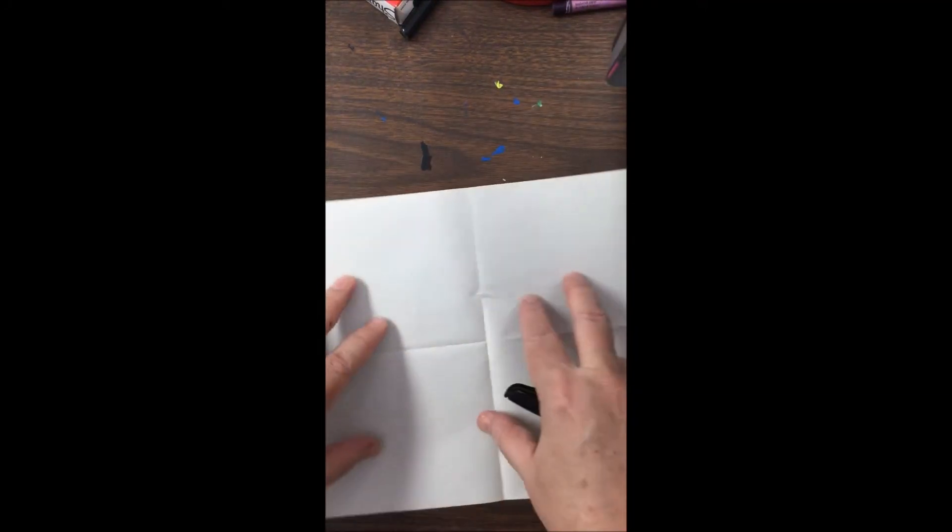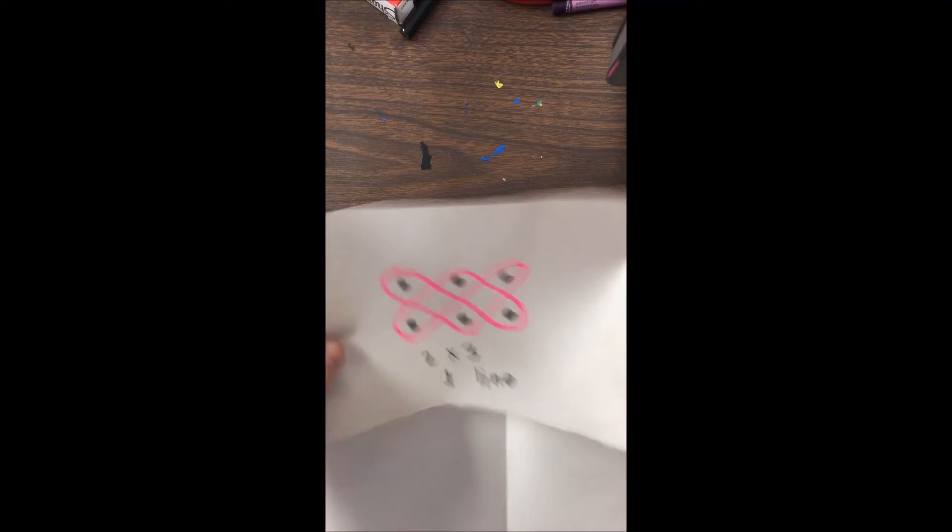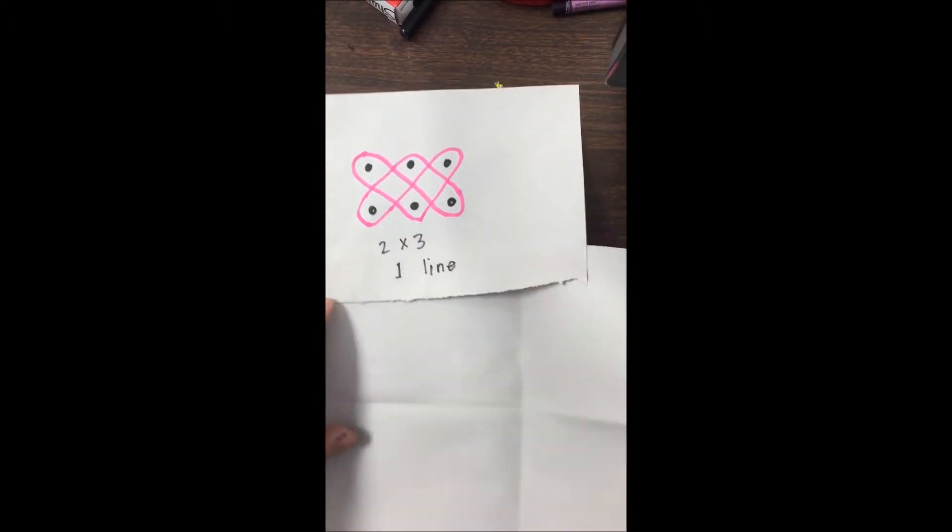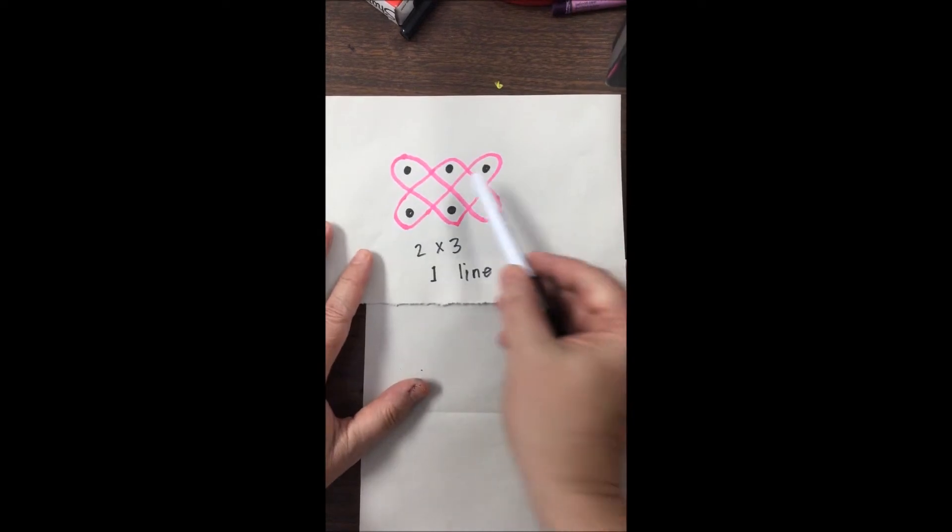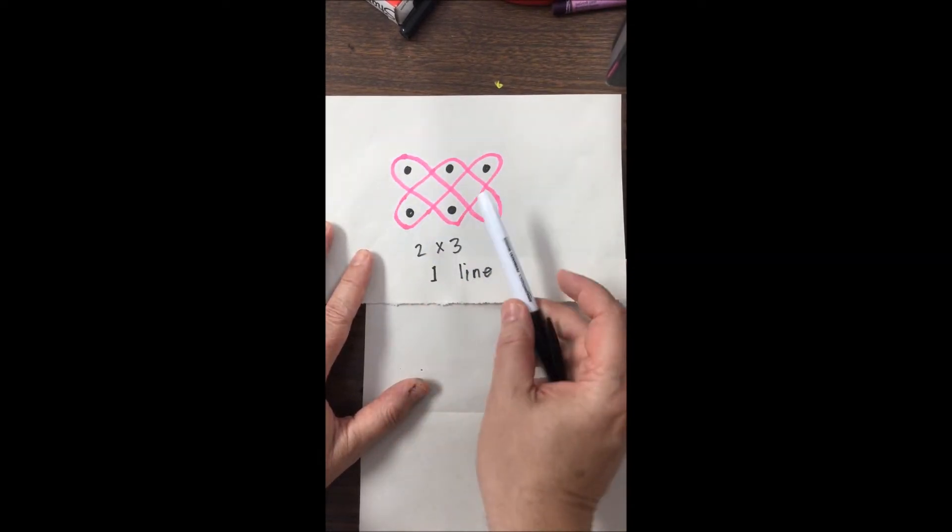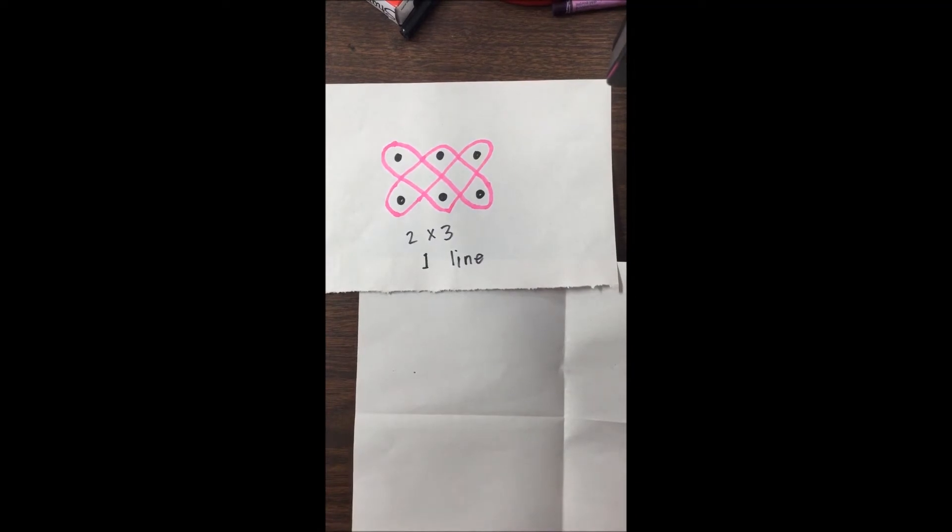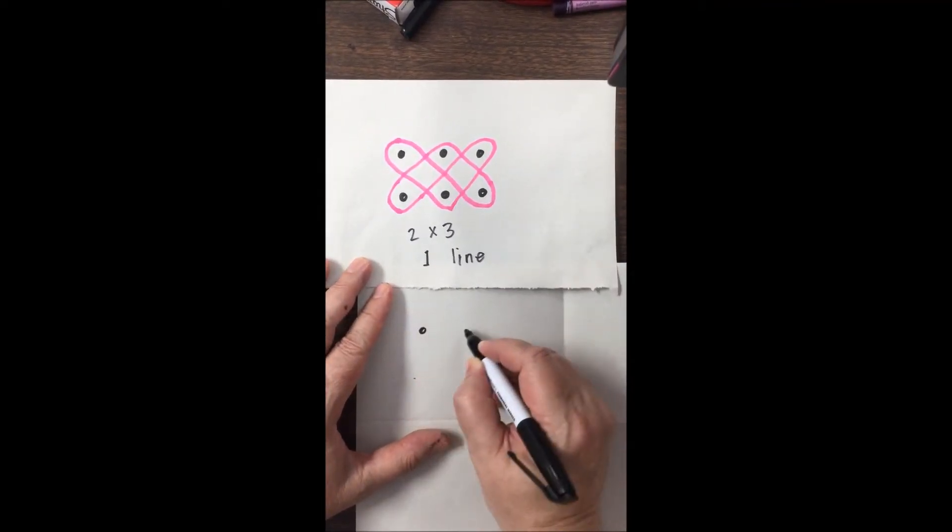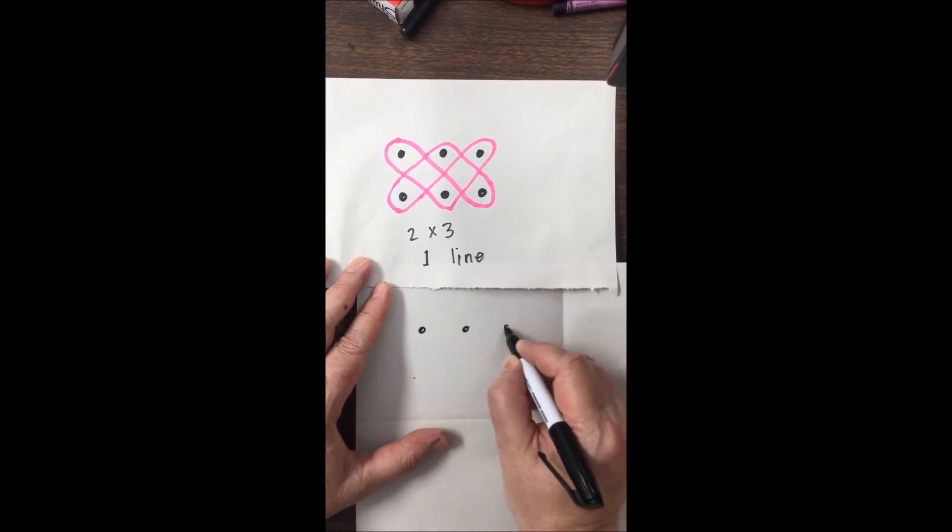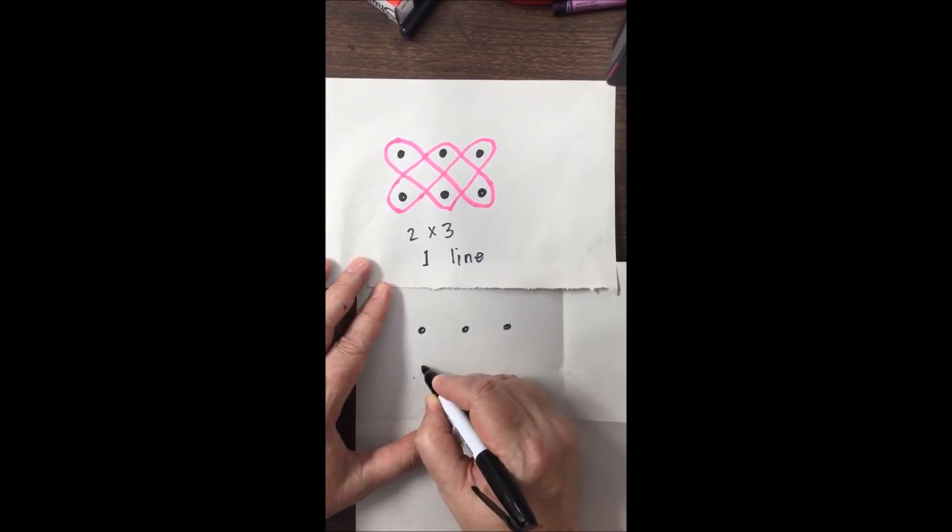We're going to do some Sona drawings. I need a piece of paper that I have folded into four sections. Let's start with a two by three array and the two means two rows. Here's one row, two rows and of course the three dots. So I'm going to start by making my dots evenly spaced one row and then just copy that row underneath.